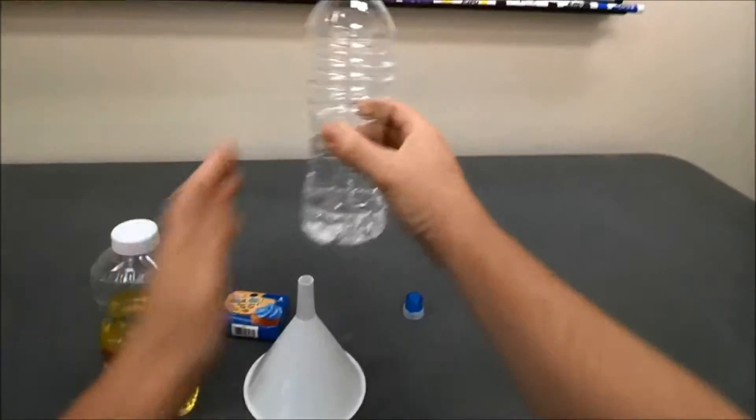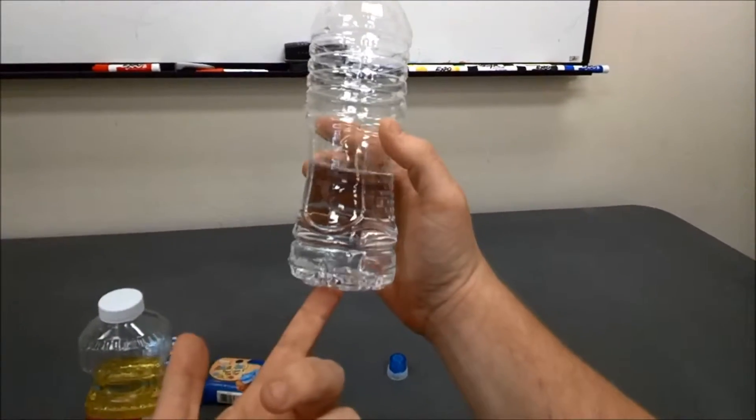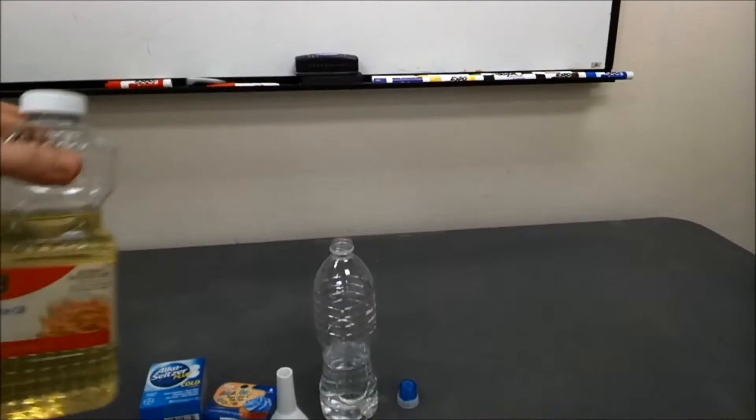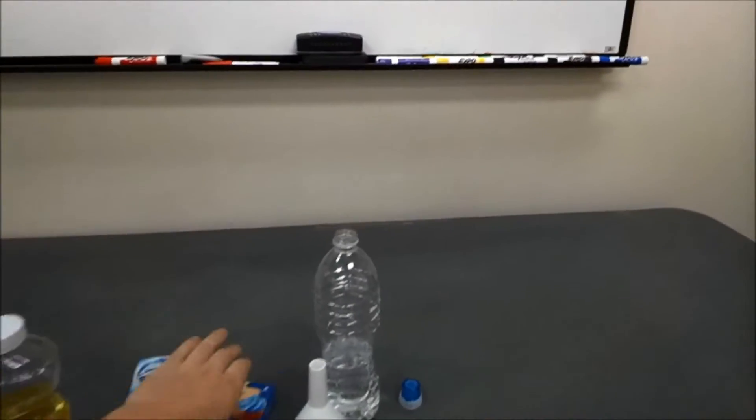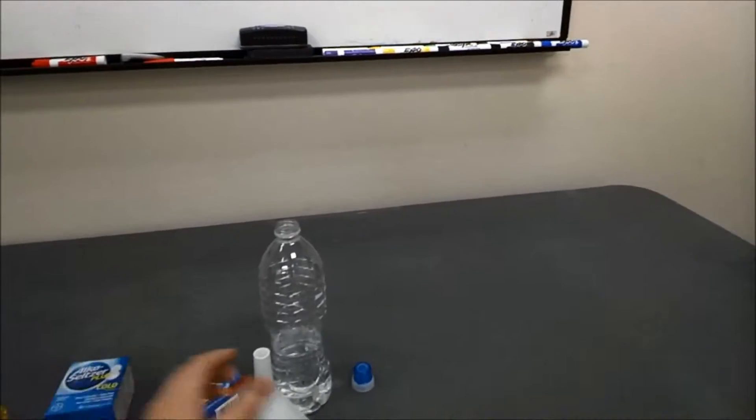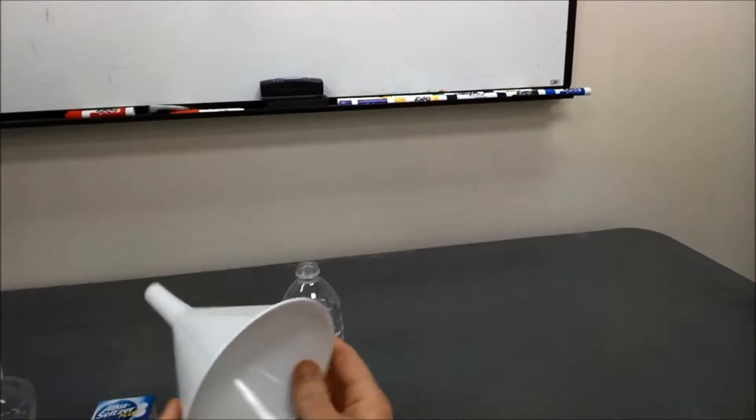Here's what we're going to need. We're going to need a plastic bottle with water. I already filled it about a quarter to halfway filled with water already. We're going to need vegetable oil, food coloring, Alka-Seltzer, and a funnel just to make life a little easier.